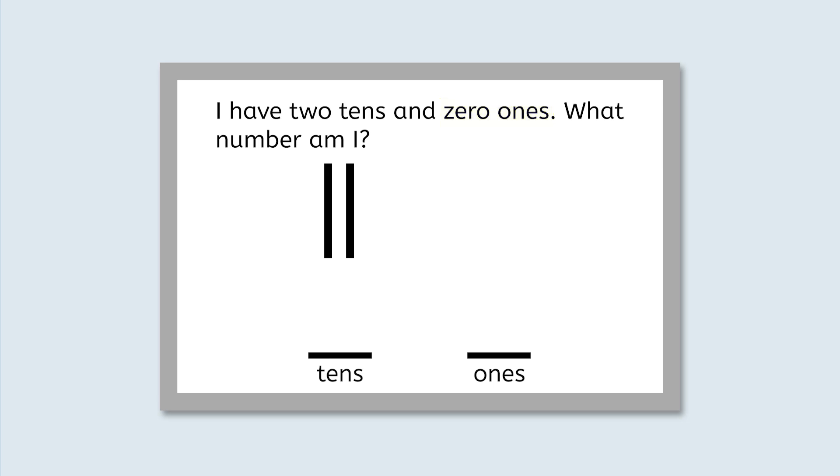If you ever get stuck on a tricky number, don't forget you can use what you know about place value to write the numeral. In two-digit numbers, I know that the tens place is first and the ones place is second. If this number has two tens and zero ones, that makes twenty! Great thinking!